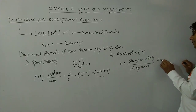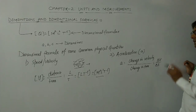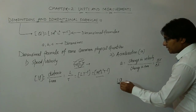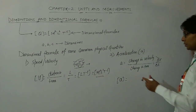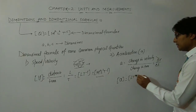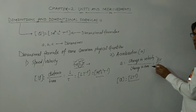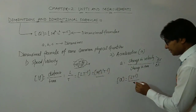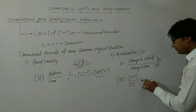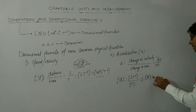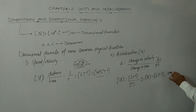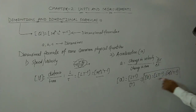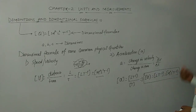The change in velocity can be represented as delta v and change in time as delta t. So acceleration a equals change in velocity divided by time. Writing the dimensional formula: L T⁻¹ in place of delta v, divided by T for delta t. The dimensional formula of acceleration becomes L T⁻², which can also be expressed as M⁰ L¹ T⁻².